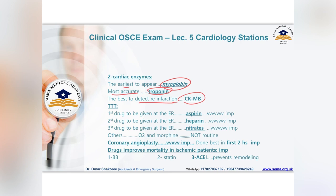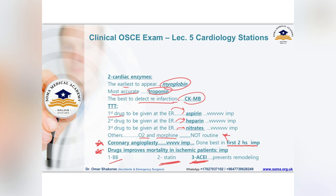Regarding treatment: the first drug to give in the emergency department is aspirin. The second is heparin or enoxaparin. The third important drug is nitrate. Oxygen and morphine are not routine for all patients. Coronary angioplasty is best performed within the first two hours of chest pain onset. Drugs that improve mortality in ischemic patients are ACE inhibitors, statins, and beta-blockers.